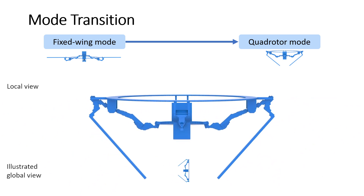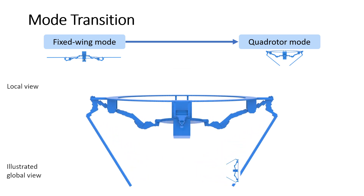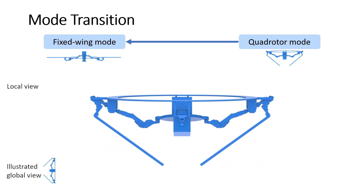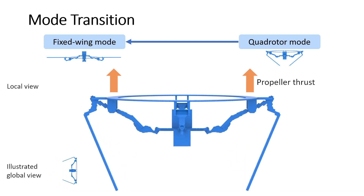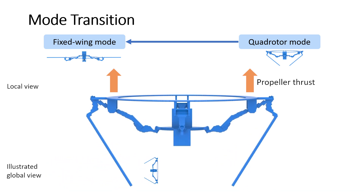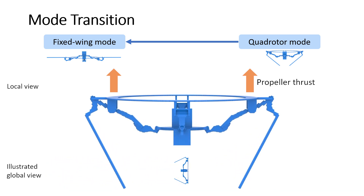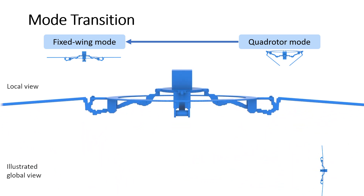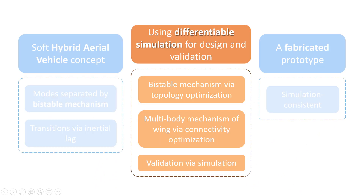After the propellers stop outputting thrust, it will remain in the quadrotor mode. To transition from quadrotor mode to fixed-wing mode, we accelerate the ring again. Energy is temporarily stored in the compliant arms. After the propellers stop outputting thrust, this energy is released to bounce the central mass from the quadrotor mode to the fixed-wing mode.